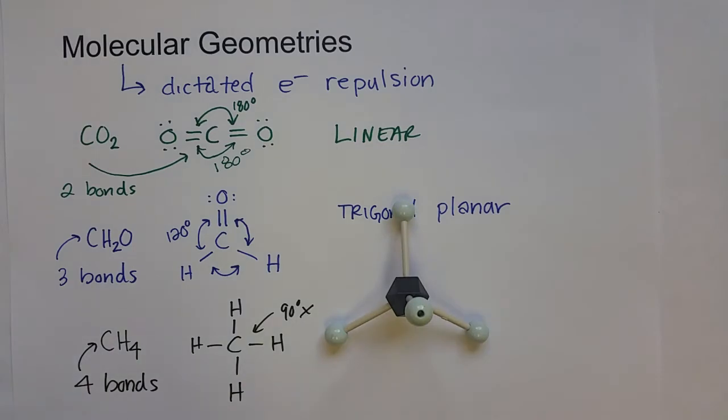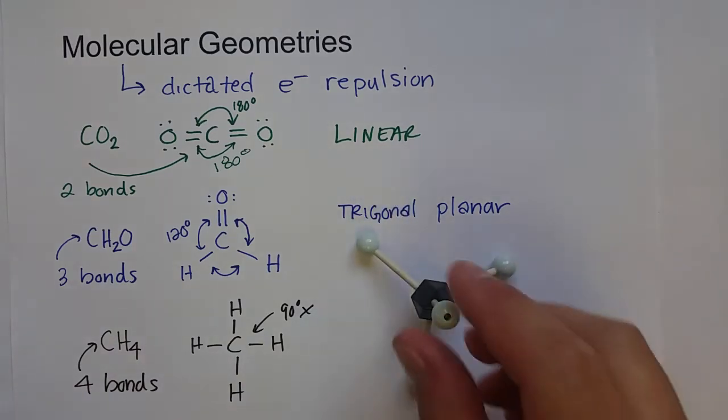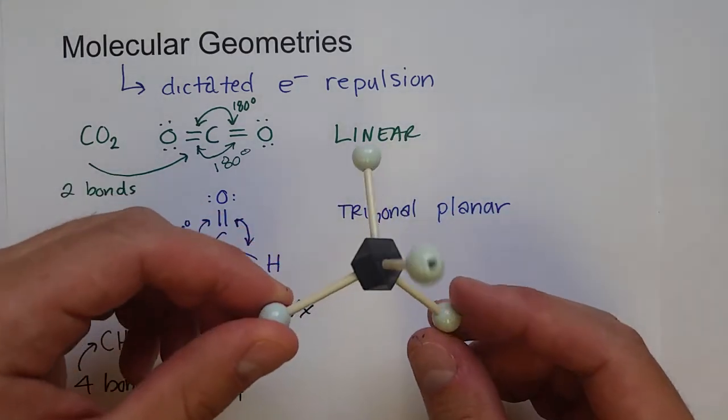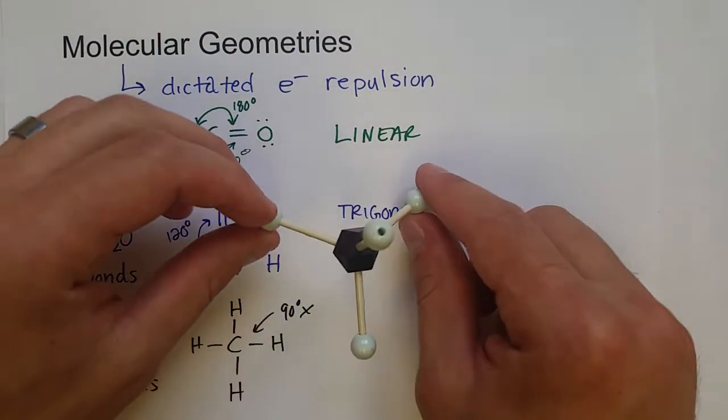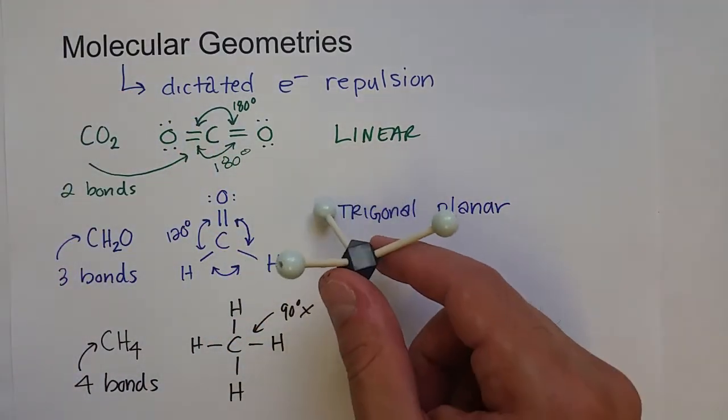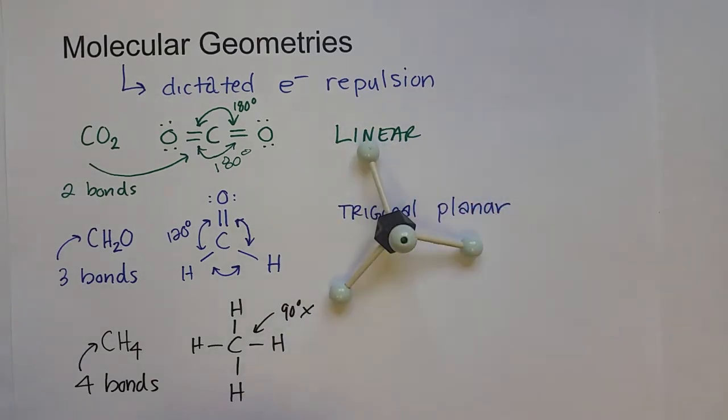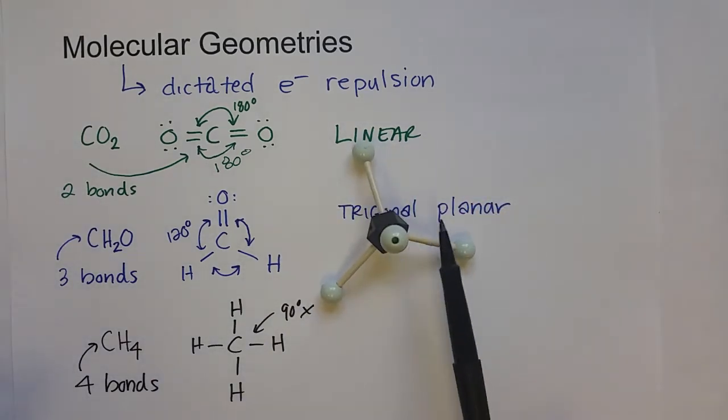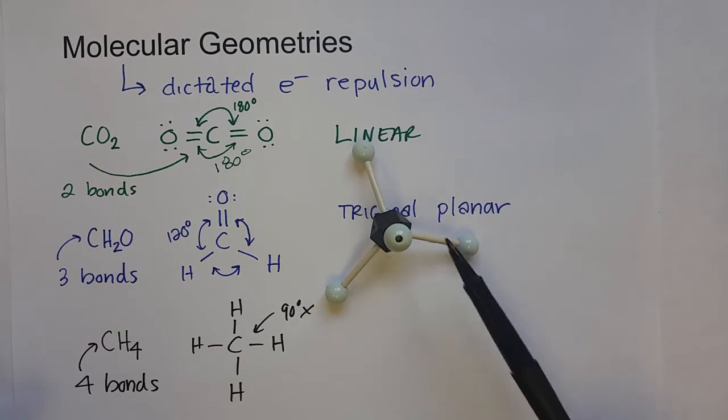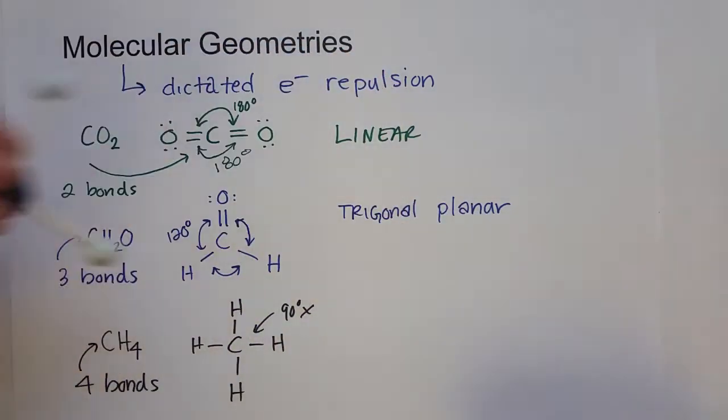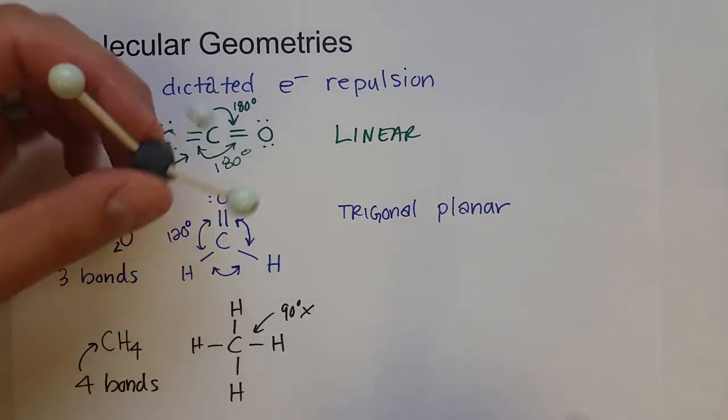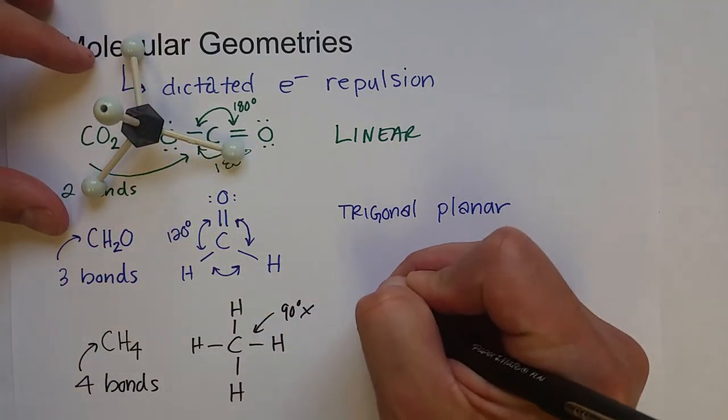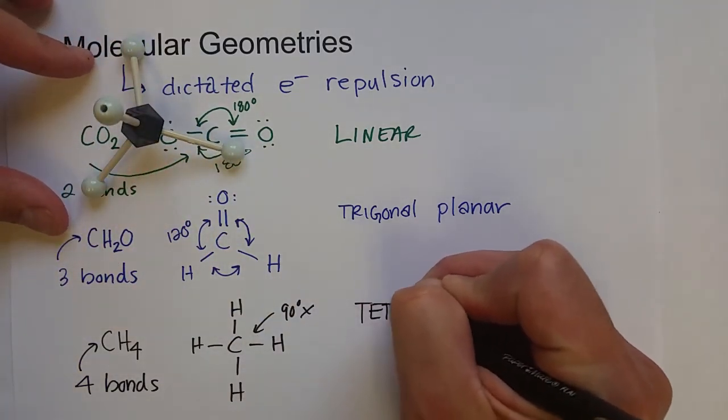They can actually get further away if you move it out into three dimensions. Okay, and it turns out that methane will take on this shape, where each hydrogen atom is 109.5 degrees away from each other. And in three dimensions, that's the furthest that all four of these bonds, these electrons in these bonds, can get away from each other. And this takes the shape of a tetrahedron, or a four-sided pyramid structure. And so this is called a tetrahedral geometry.